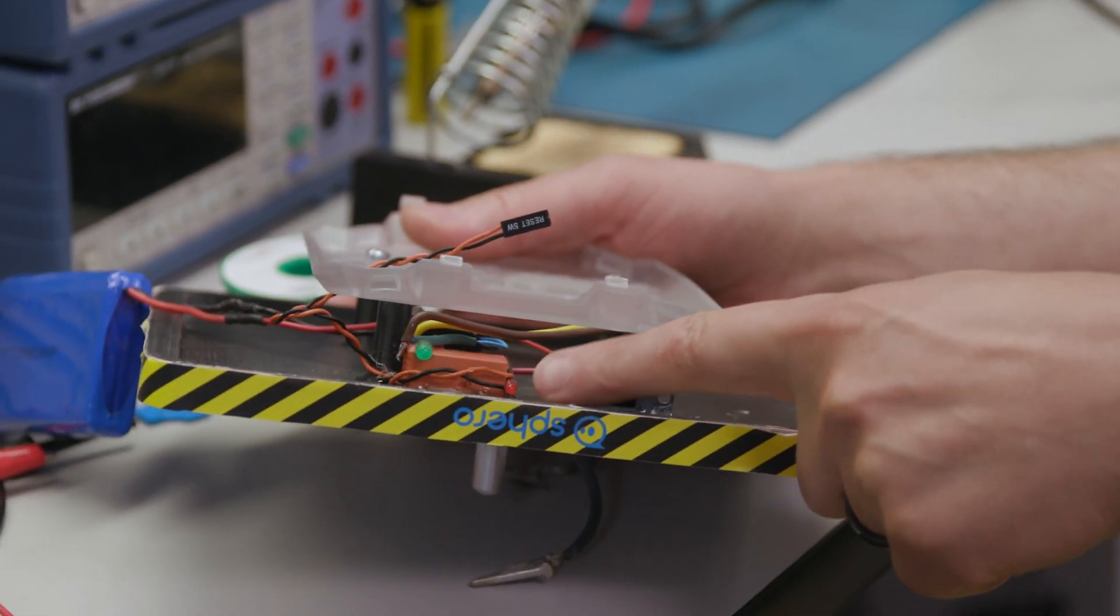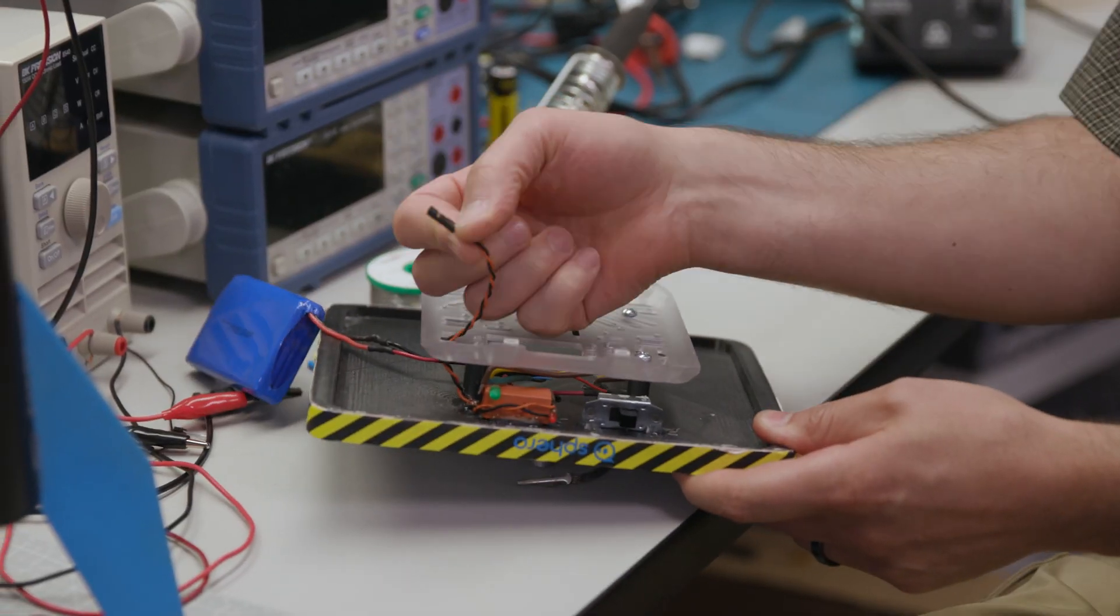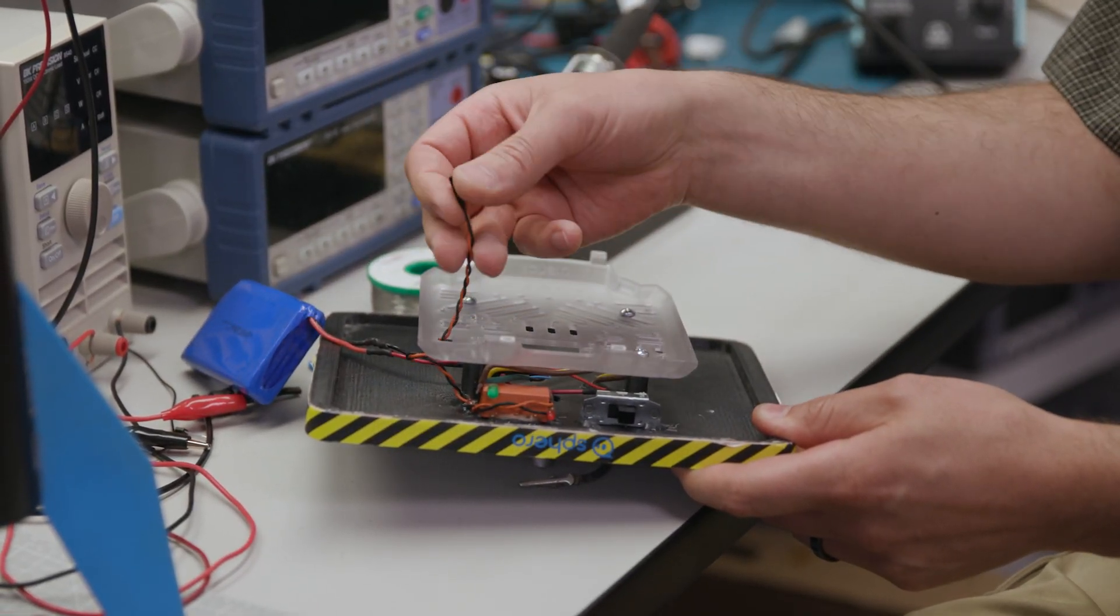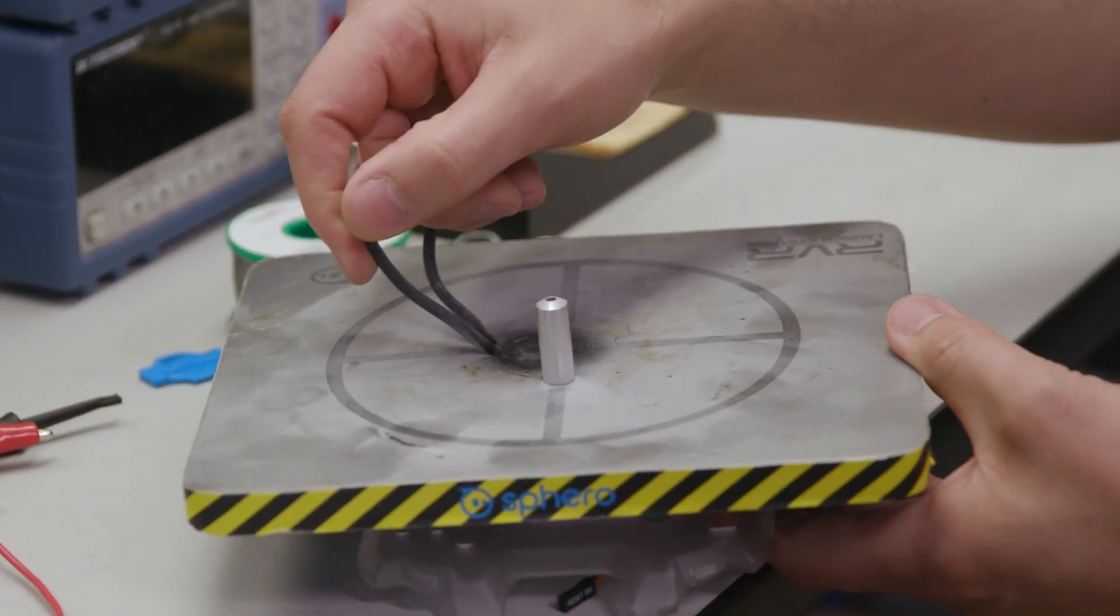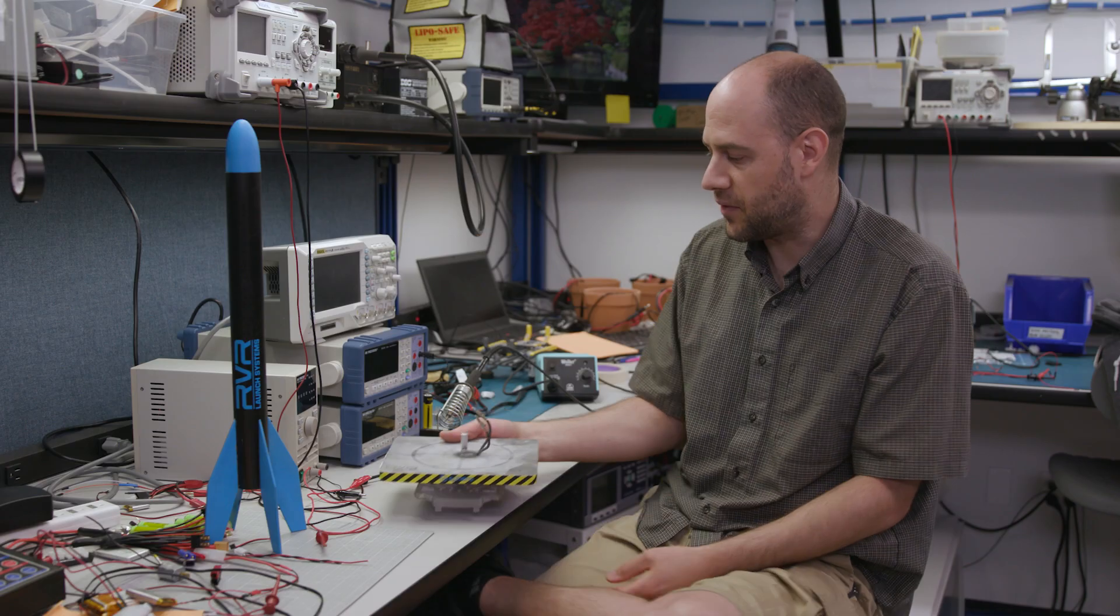This plugs into the Rover to launch it and sends power from the battery up to the contacts themselves, which ignites the igniter and launches the model rocket.